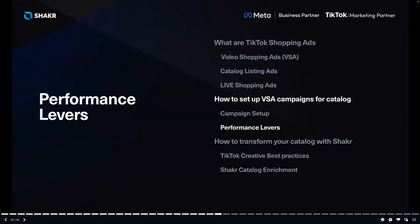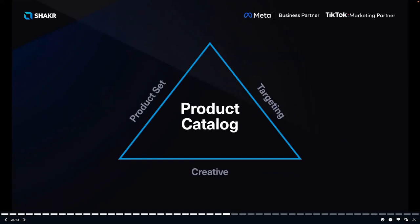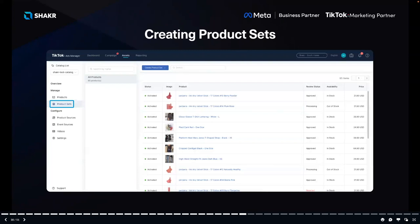Now let's look at the performance levers you can use to improve campaign performance. Running catalog ads means they are powered by your product catalog, and you have three performance levers to pull: Product Set, Targeting, and Creative. A product set is essentially a set of products which share similar characteristics. Sometimes you want to focus on a smaller part of your catalog instead of advertising the whole catalog at once, which can lead to much better performance.